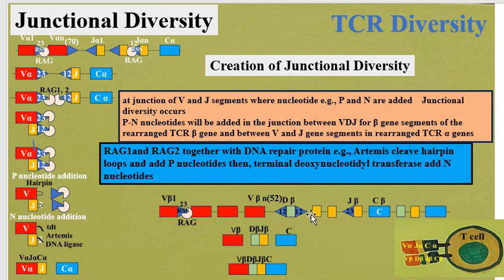However, recombination signal sequences flank both sides of the diversity segment. RAG1 (recombination activating gene 1) and RAG2, together with DNA repair protein Artemis, cleave hairpin loops that form and add P nucleotides.